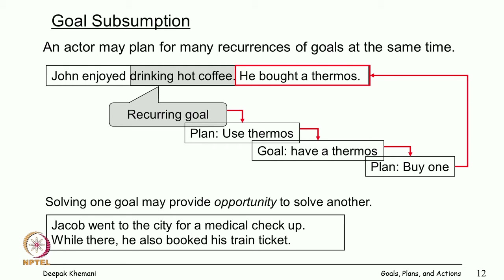Another example: Jacob went out to the city to do a medical check-up and while there he also booked his train ticket. You often do that — if you are going out to see a movie anyway, maybe you do some shopping also. So solving one goal may provide an opportunity for solving other goals.